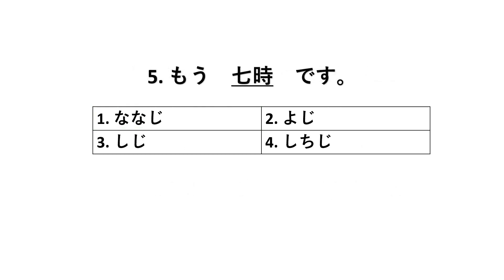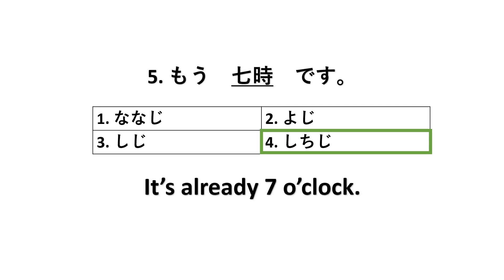Next: Mo [blank] desu. This is about time, and the correct answer is the fourth one, shichi ji — not nana ji, but shichi ji. Yo ji is four o'clock. The sentence means: it's already seven o'clock. Mo shichi ji desu.